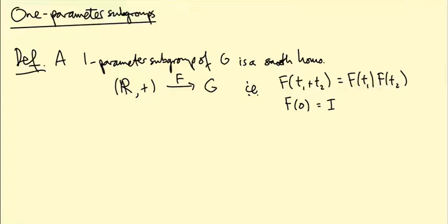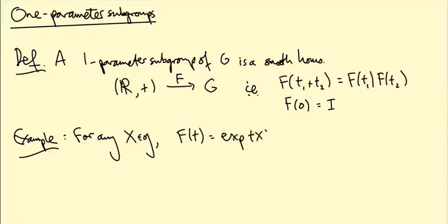So let me give you an example. For any element X in the Lie algebra of G, the map F(T) equals exp(TX) is a one-parameter subgroup.